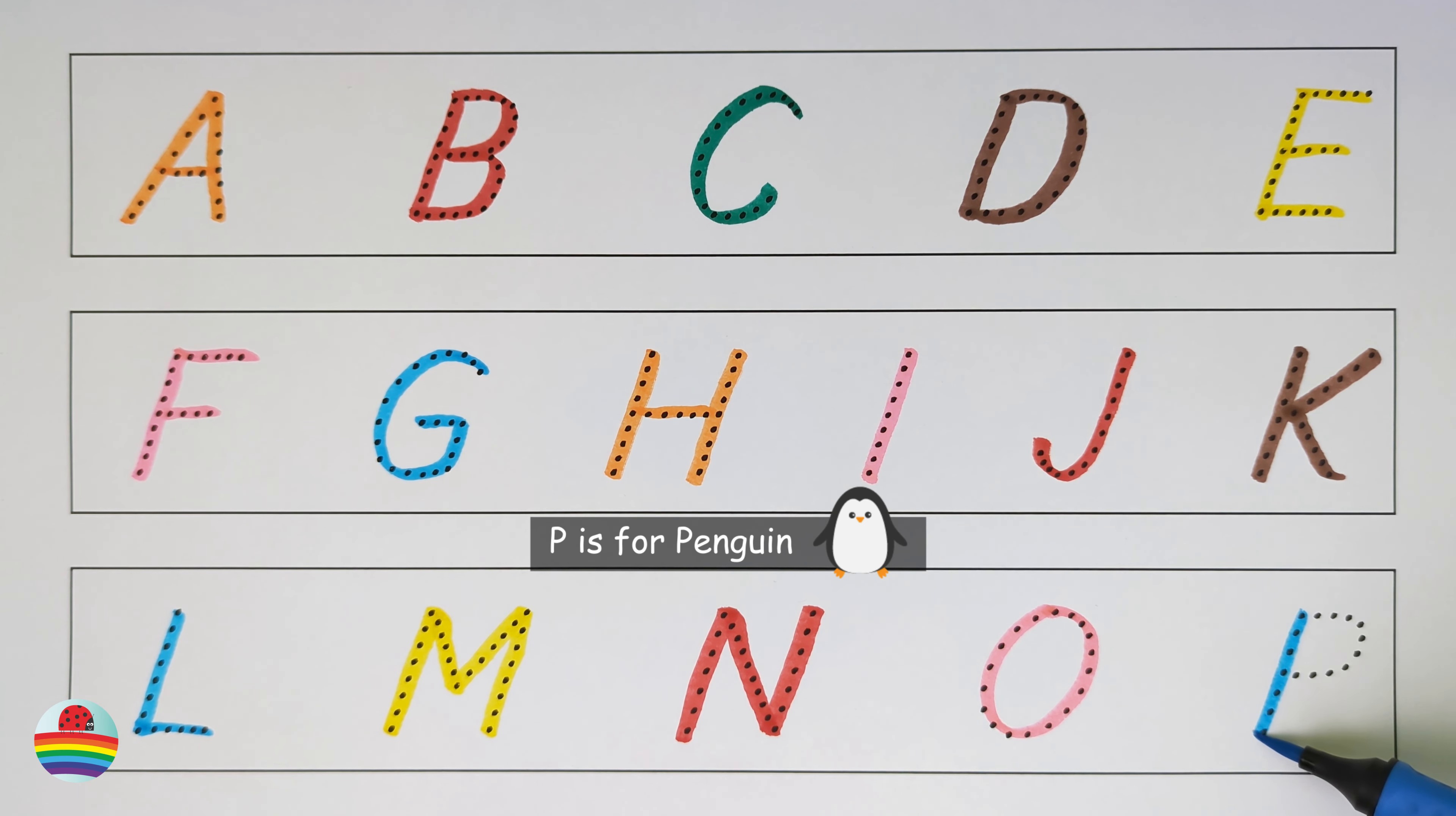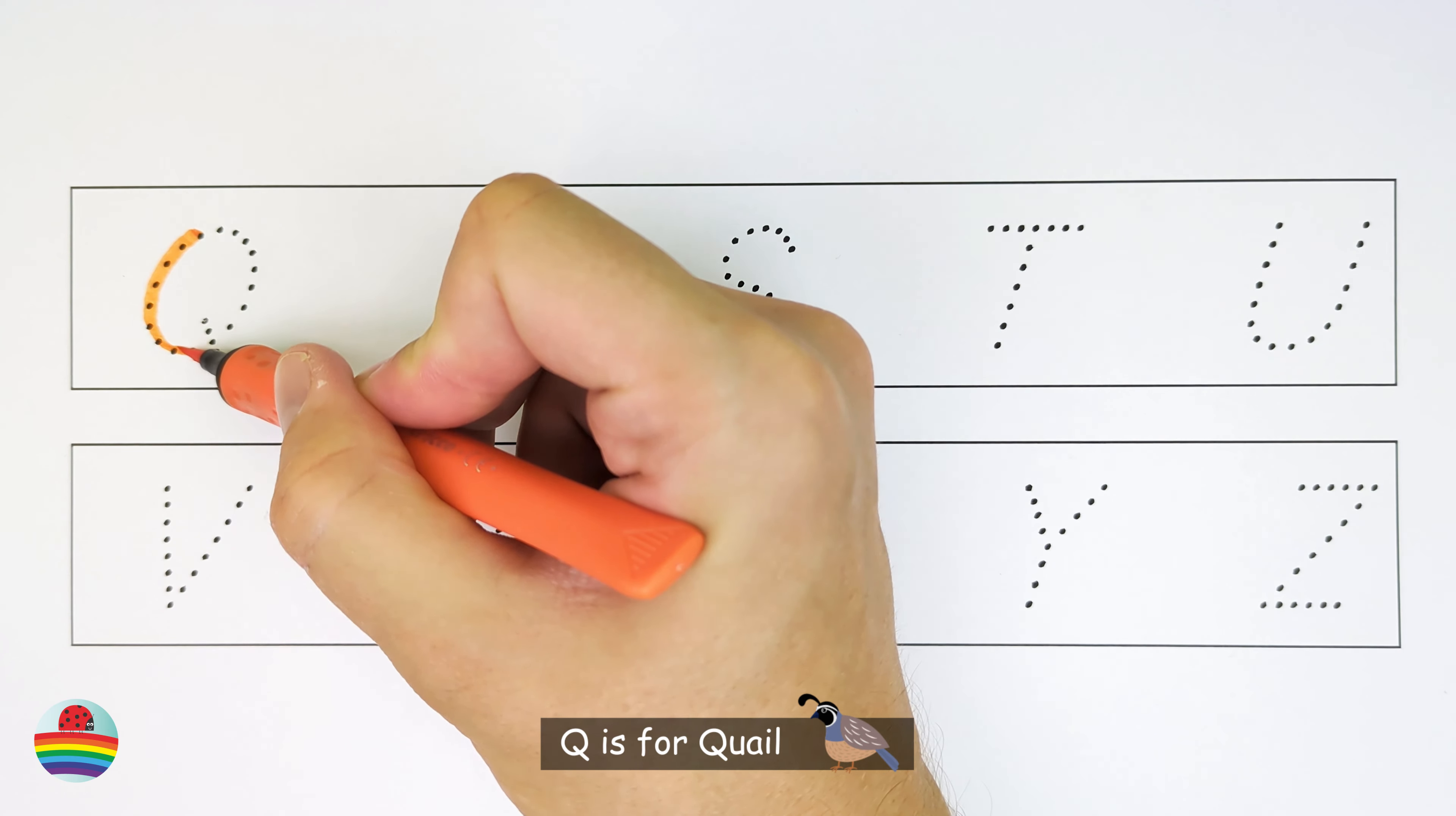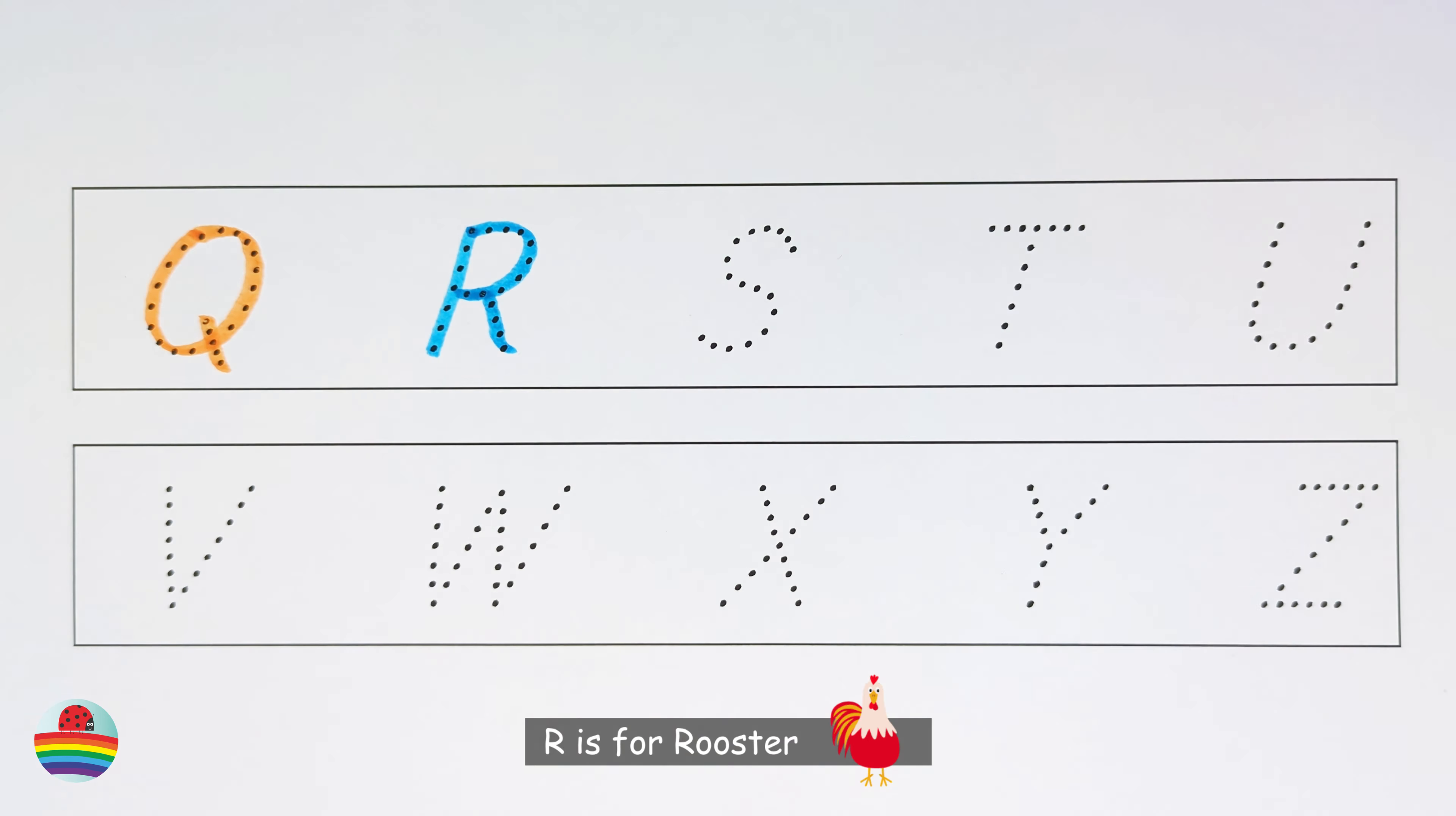P. P is for Penguin. P. Q. Q is for Quail. Q. R. R is for Rooster. R.